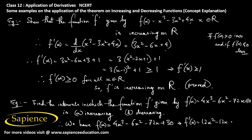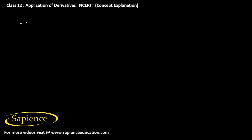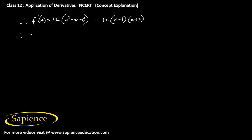So f'(x) = 12x² - 12x - 72 = 12(x² - x - 6). This quadratic expression can be factorized as 12(x - 3)(x + 2). Setting f'(x) = 0 gives 12(x - 3)(x + 2) = 0, so x = -2 or x = 3.